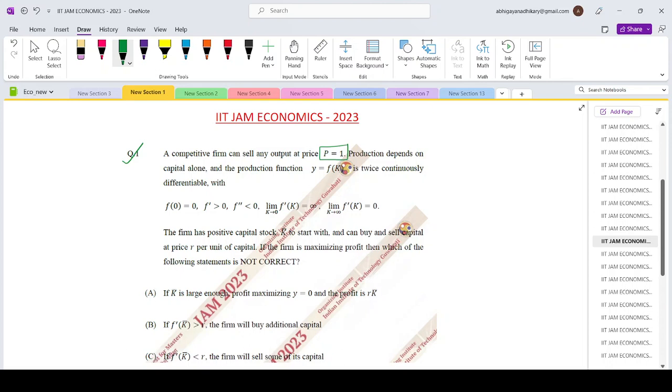If you look at these conditions carefully, F prime positive, F double prime negative, and the limit conditions which are basically similar to the Inada conditions.